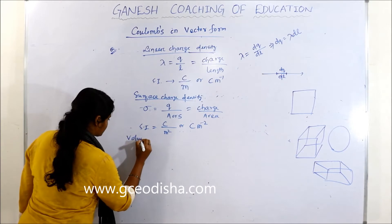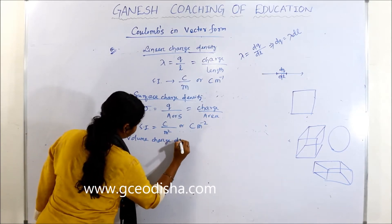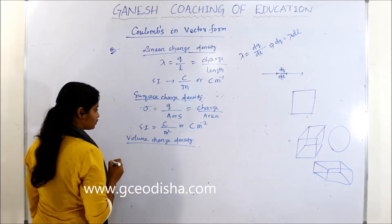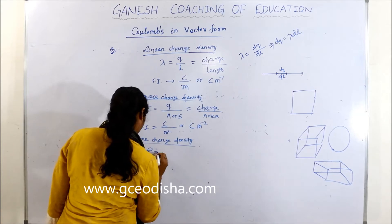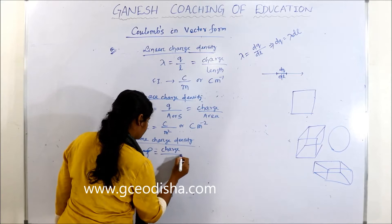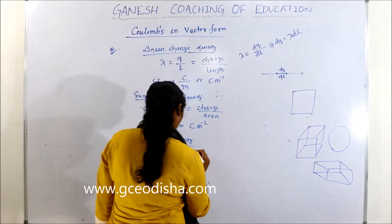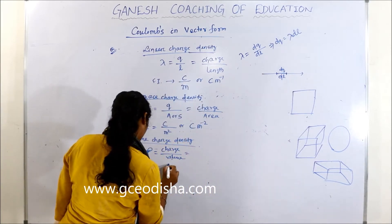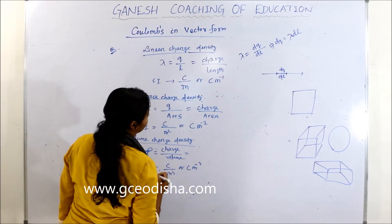Then volume charge density. Volume charge density is represented as rho. Rho is equal to charge by volume. The SI unit is coulomb per meter cube, or coulomb meter to the power minus 3.